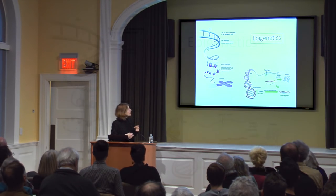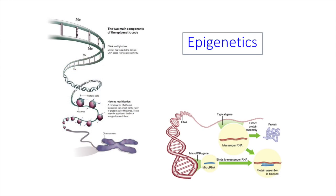The third mechanism was only later added to the understanding of epigenetics, and that is microRNAs. MicroRNAs also contribute to being able to read information on the DNA. What the microRNA does is it potentially binds to messenger RNA and therefore blocks the translation process so the protein is not created. So we have DNA methylation, chromatin and histone modification, and microRNAs as the three fundamental mechanisms in epigenetics. By far the best studied is DNA methylation, and most of what I'm going to talk about today is about DNA methylation.